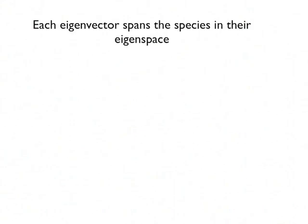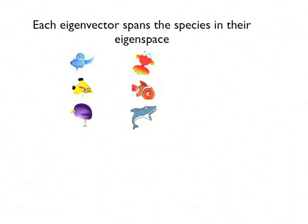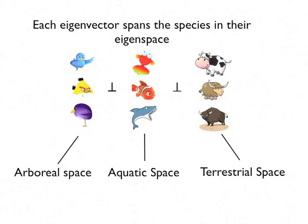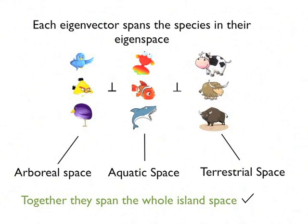Each eigenvector spans the species in their eigen space. So, the number of species of birds, the number of species of fishes, and the number of species of terrestrial animals are orthogonal to each other. And they span the arboreal space, aquatic space, and the terrestrial space. Together, they span the whole island space, which checks out our third property.